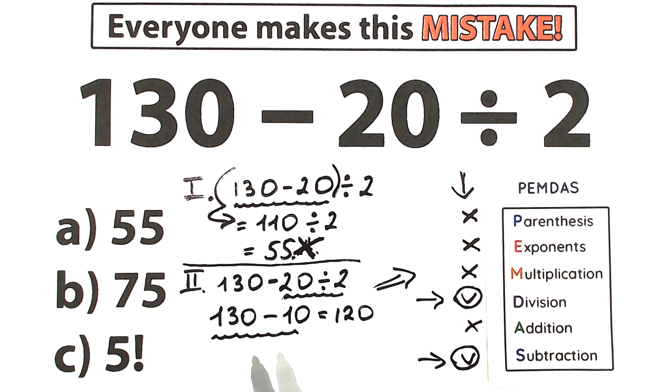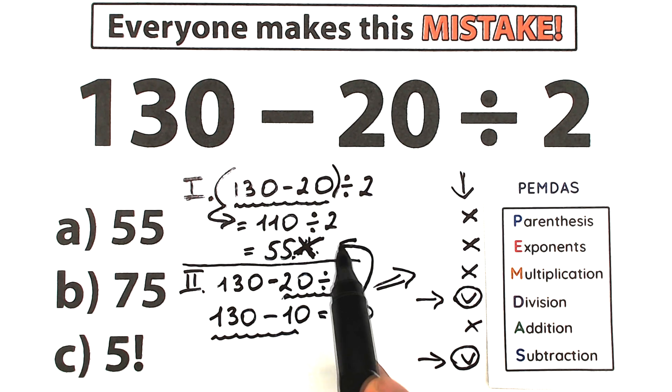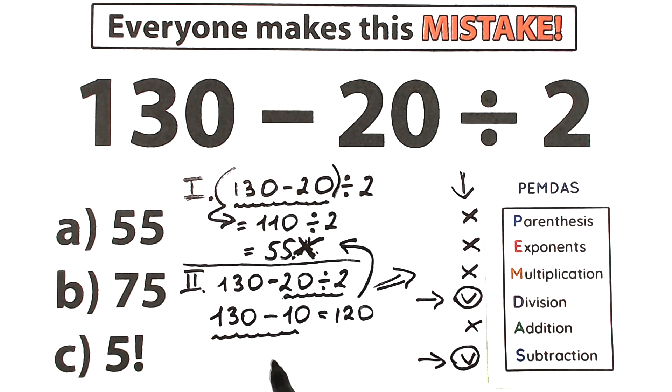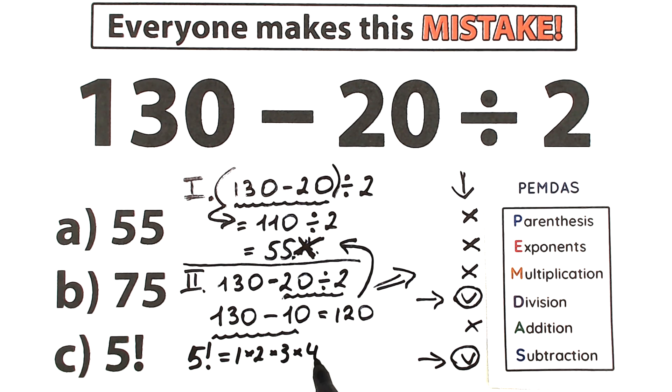But let's look closely to the option. 120, we don't have this option. And sometimes students go back to this wrong answer, 55. They say, okay, the correct answer is 55 because we don't have this option, 120. But what about this 5 factorial? Let's remember, let's learn about this 5 factorial. This is equal to 1 times 2 times 3 times 4 times 5. This is a product. Let's scan. What do we have?